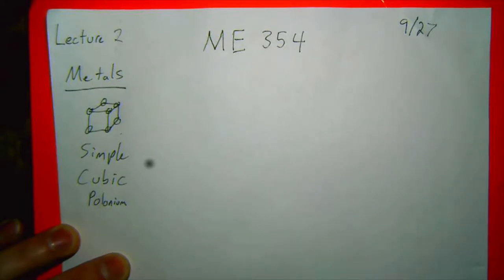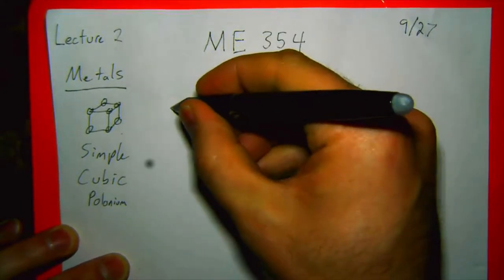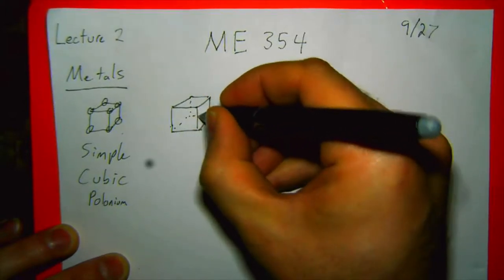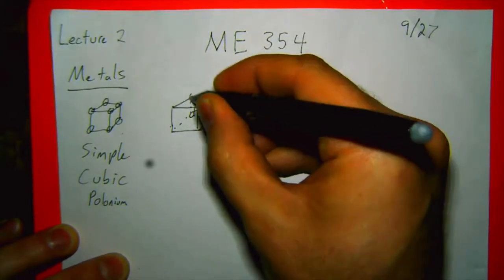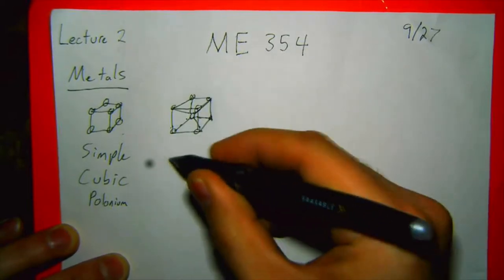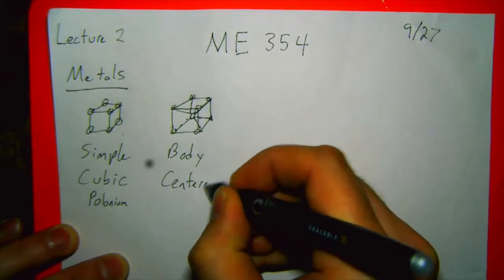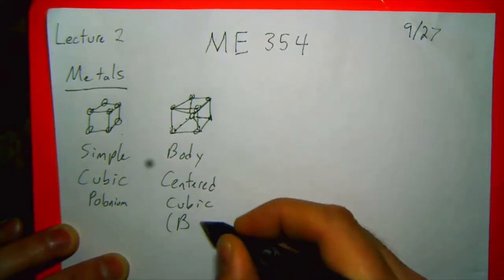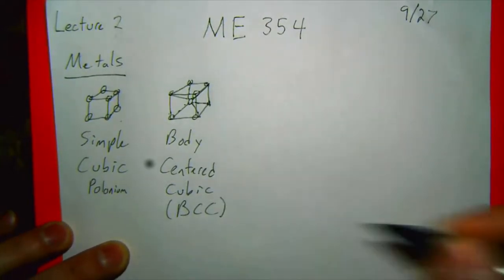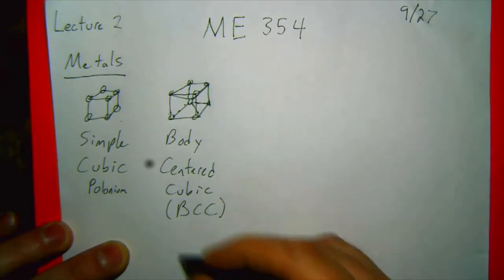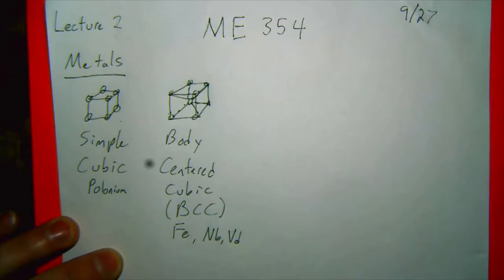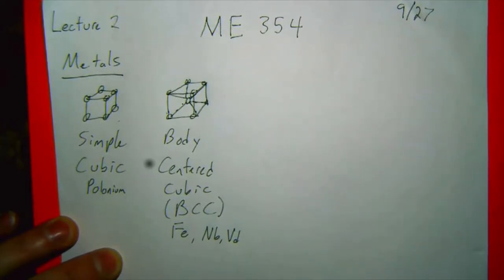Most metals will form either a BCC or an FCC structure. BCC is body-centered cubic — we have a cube with one atom in the center along with atoms at the corners. A lot of materials take on a BCC structure: iron, niobium, vanadium — it's a fairly common one.